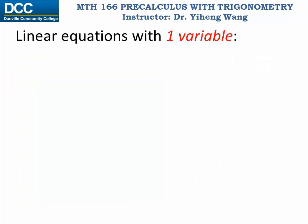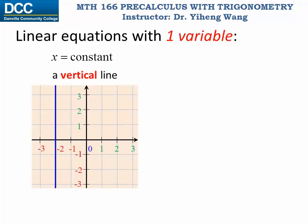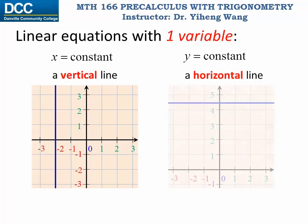So those two are examples of a special kind of linear equations, linear equations that only have one variable, x or y. If the equation is x equals to a constant, the graph is a vertical line. And if the equation is y equals to a constant, the graph is a horizontal line.